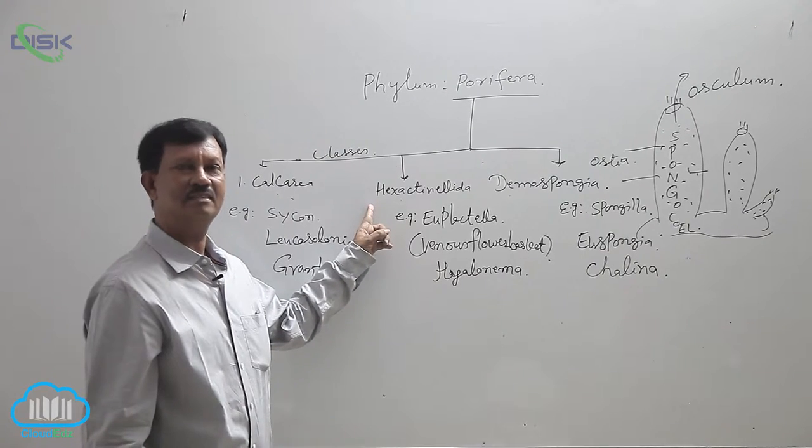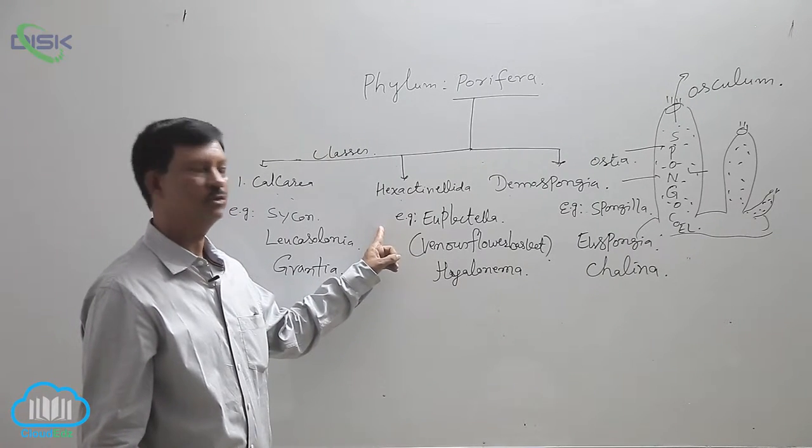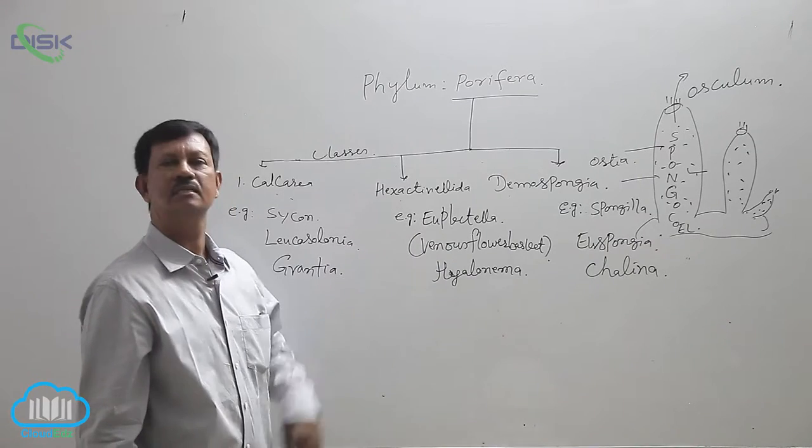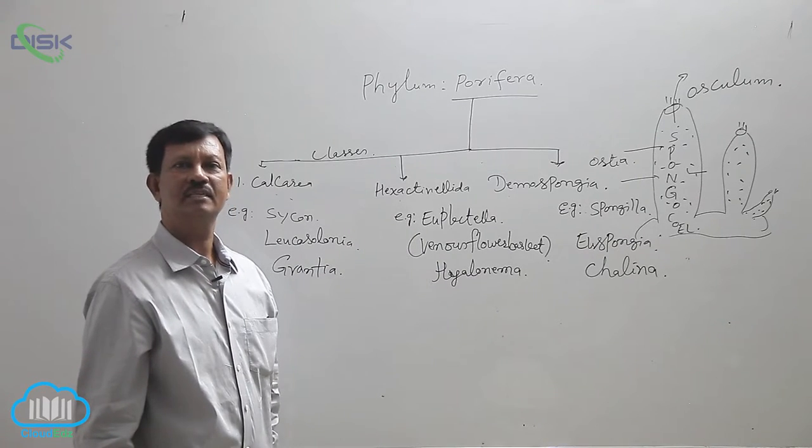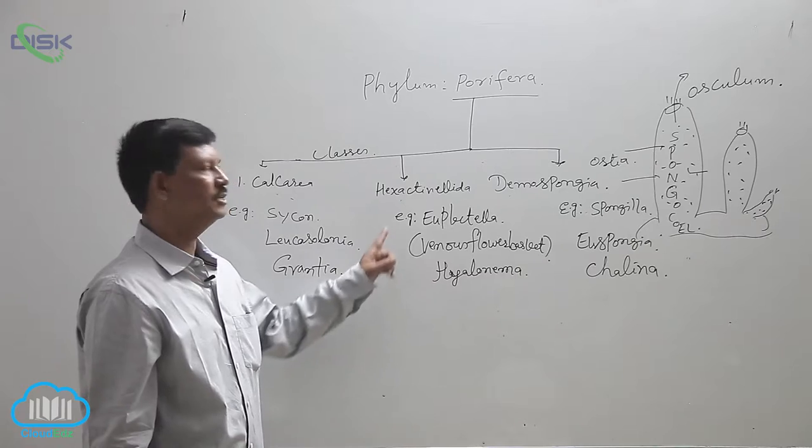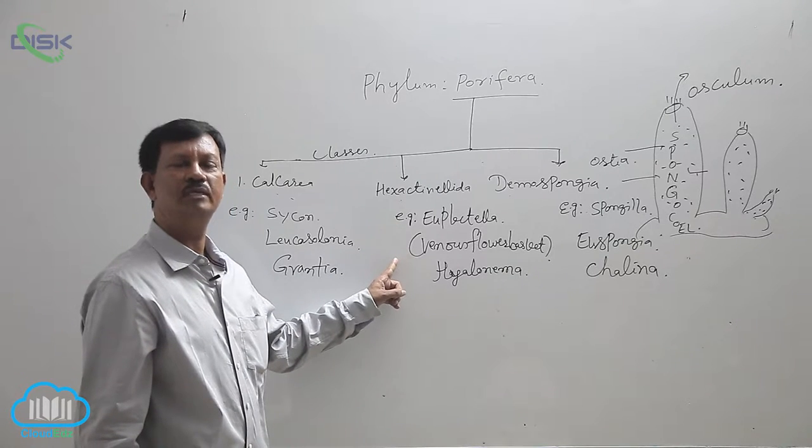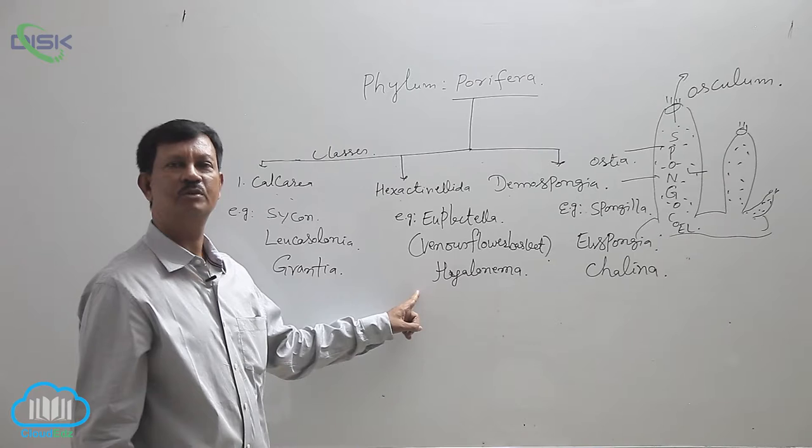These are sessile animals found in shallow marine water, and siliceous spicules are present in the body. Examples are Euplectella, which is commonly known as Venus flower basket, and Hyalonema.